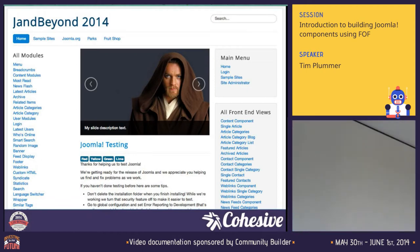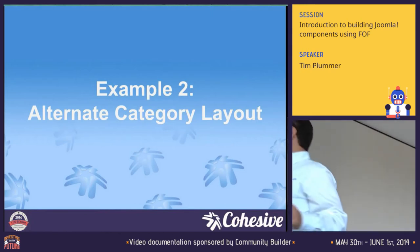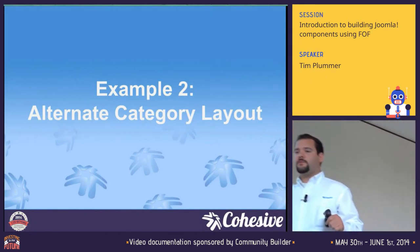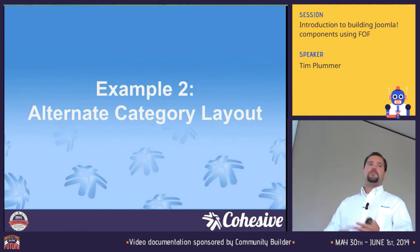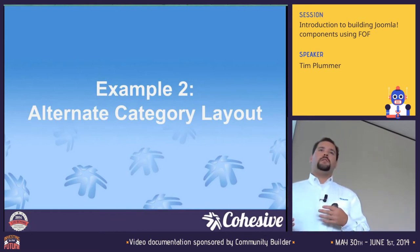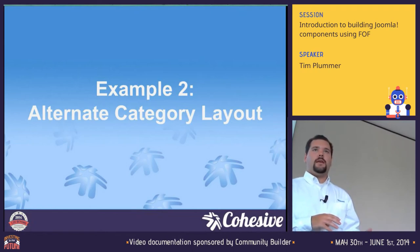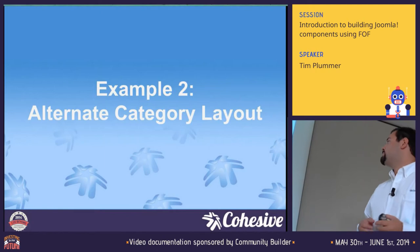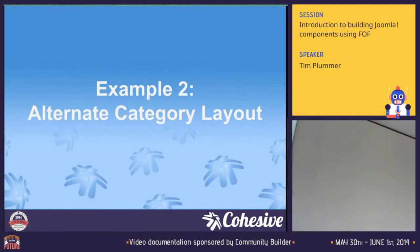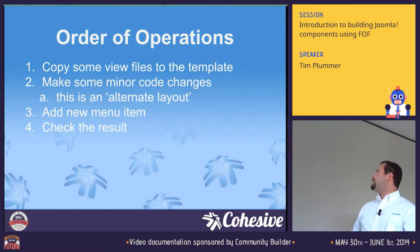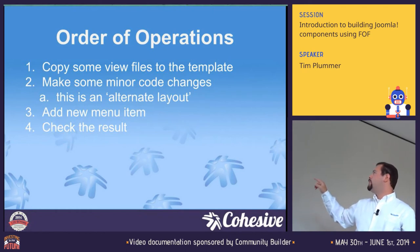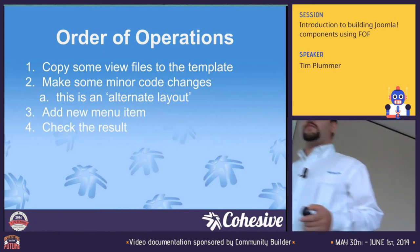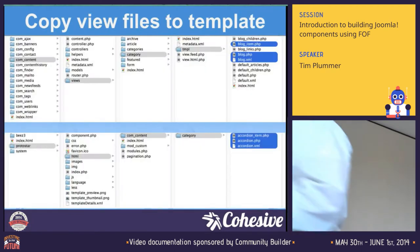One more example: creating an alternate layout for a component — specifically com_content. This enables a really custom layout for core content and is the gateway to content types. It's all supported in core. The process: copy view files within the component, make a couple of minor changes, and edit some XML.